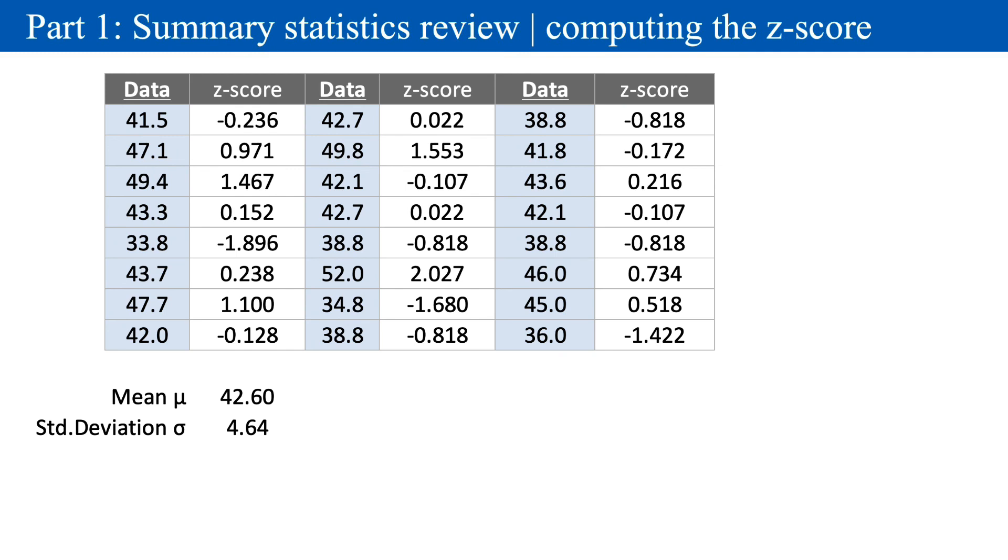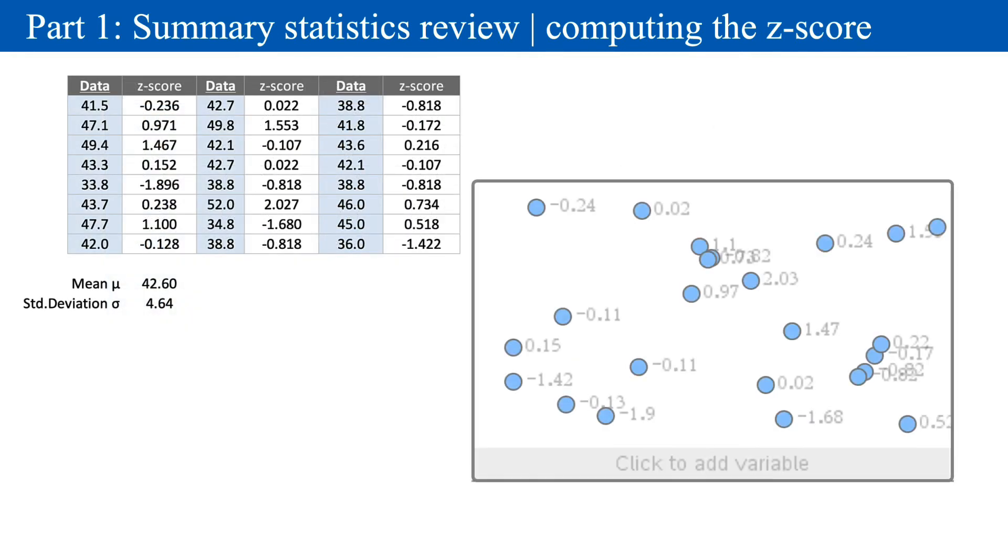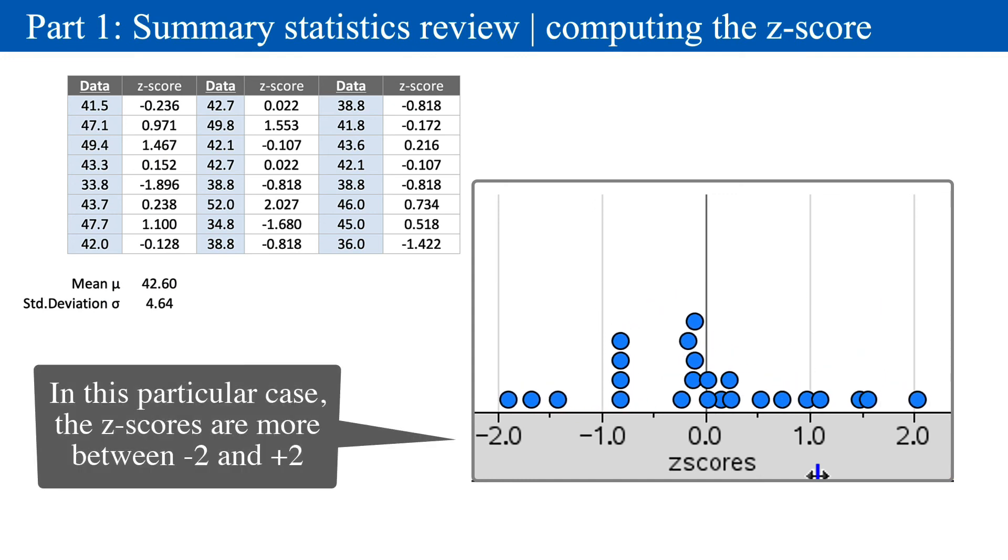Two things you should notice. The first is, about half are positive and half are negative. The second is, they are all, in this small sample, between negative 3 and positive 3. And the vast majority are between negative 1 and positive 1. Let's highlight those in pink.